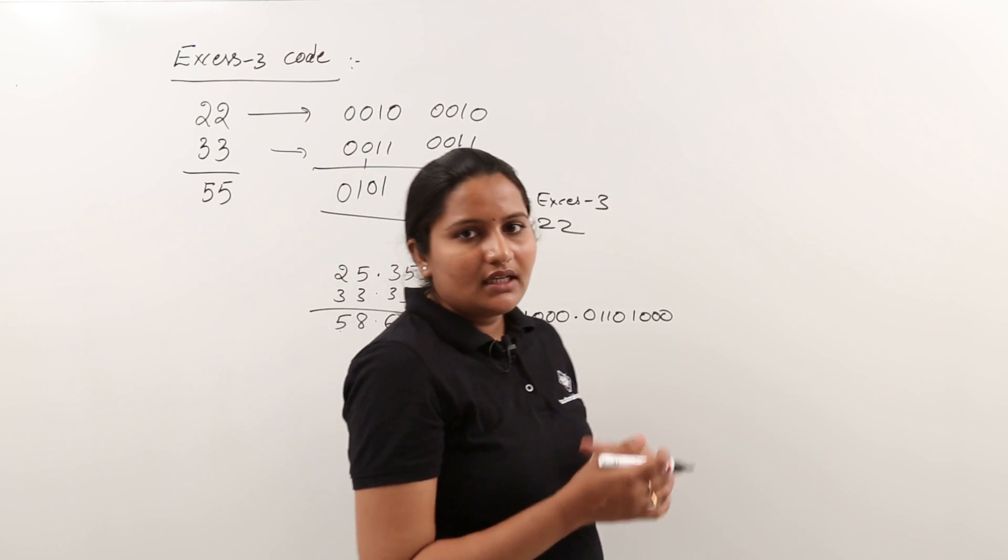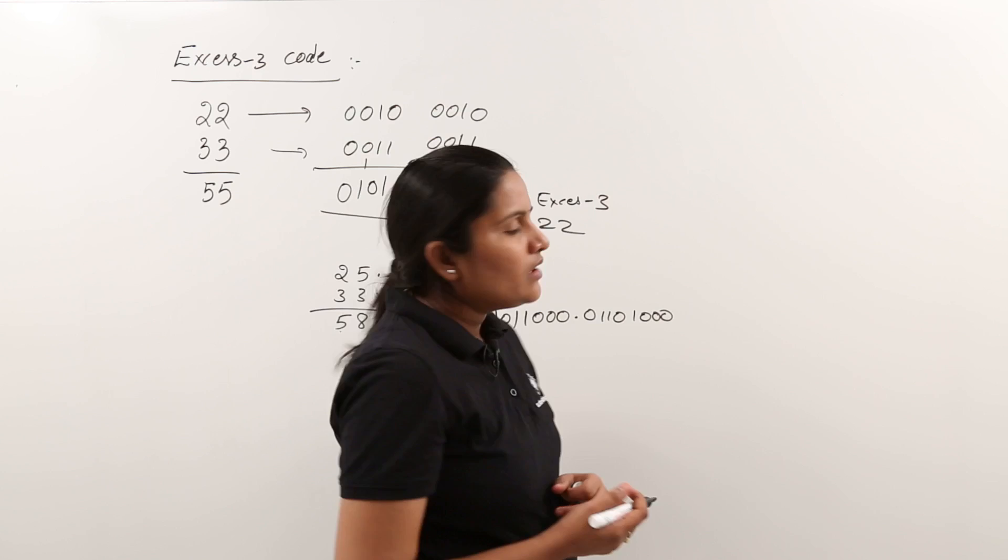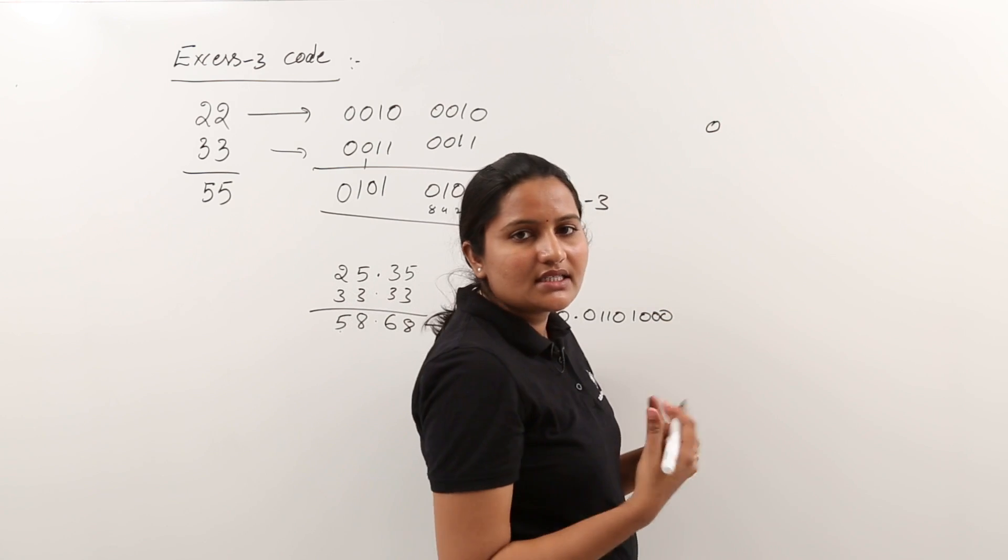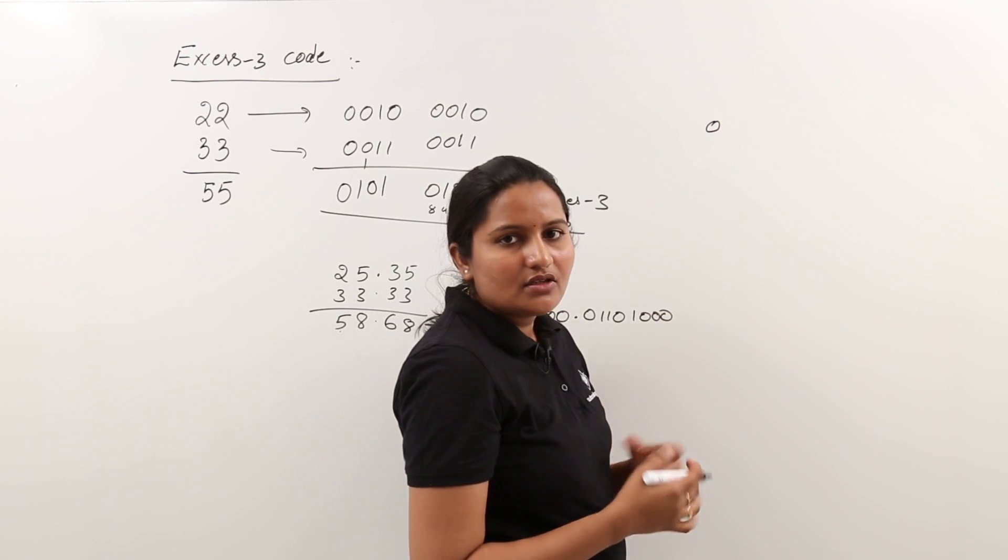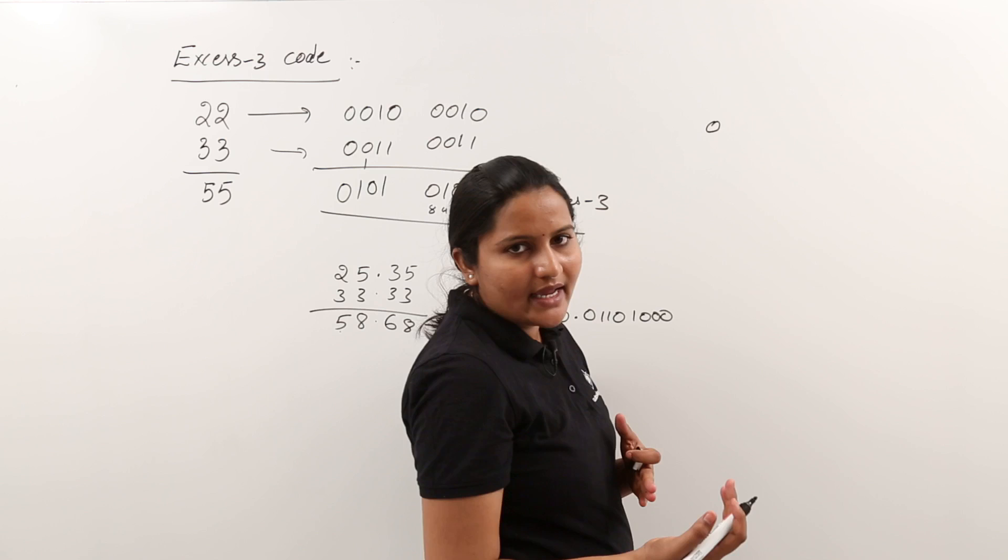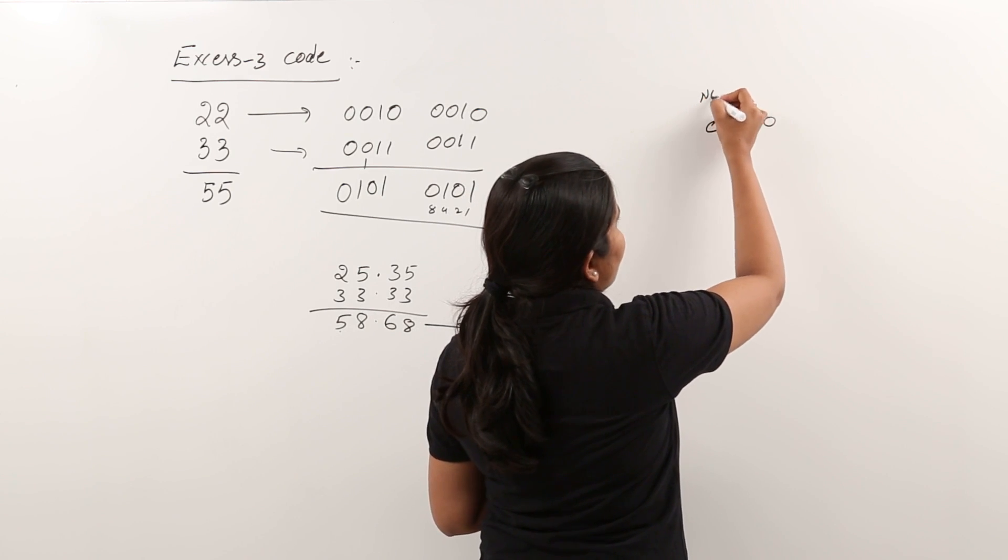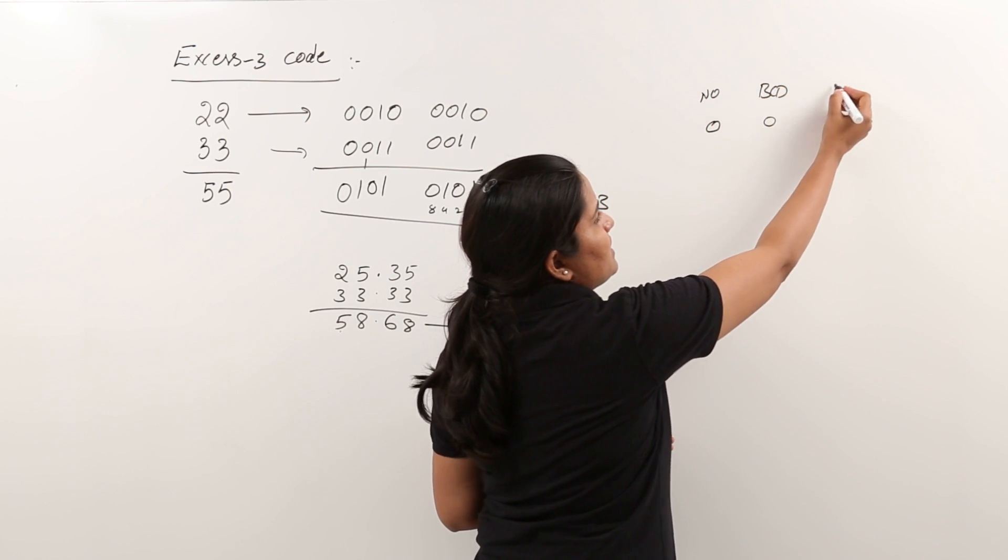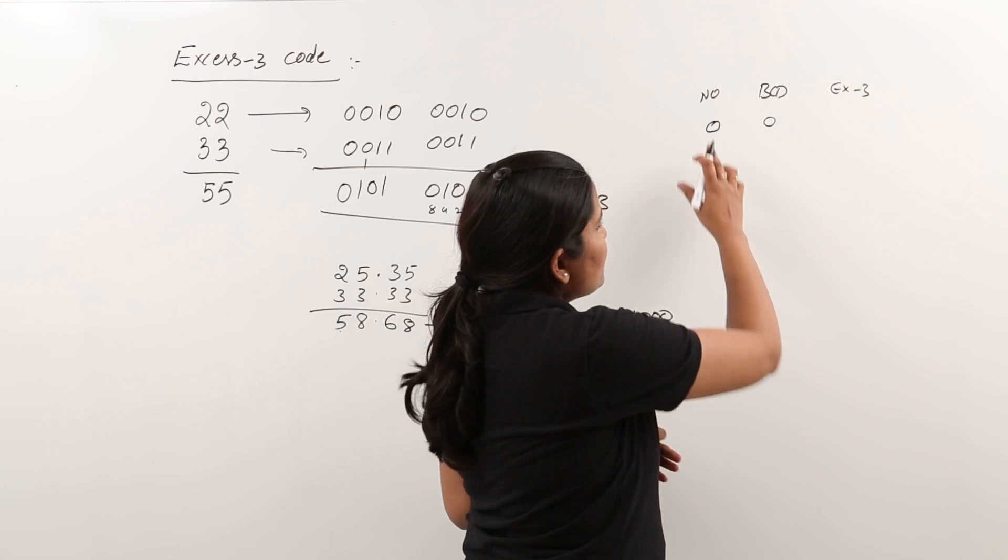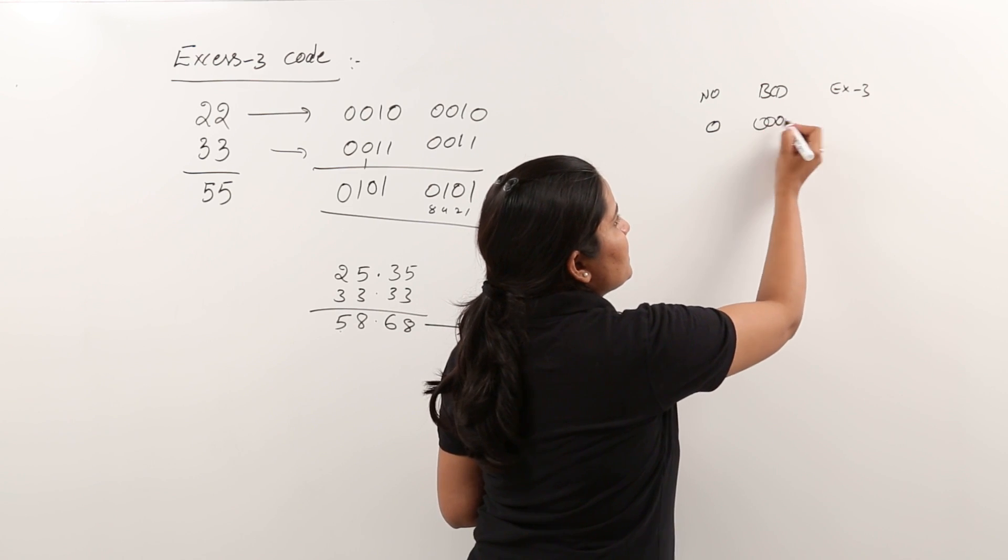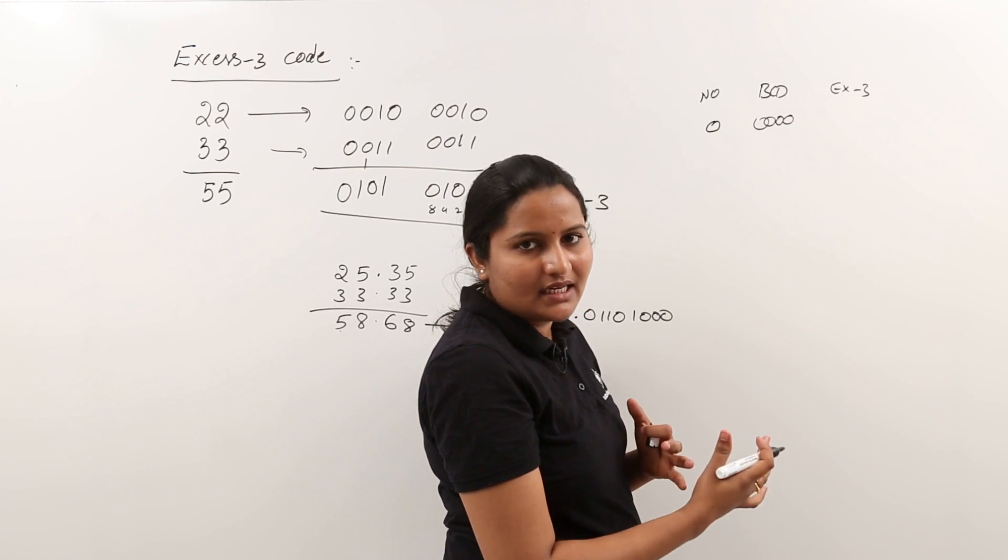So now we will see the BCD numbers and XS3 codes. For example, for 0 what is the XS3? For 0 what is the BCD? So four 0s are the BCD code. So see here, this is number, this is BCD code, and this is XS3 code. So here for 0, BCD code is just four 0s. XS3 will be 0 plus 3, that means 3.